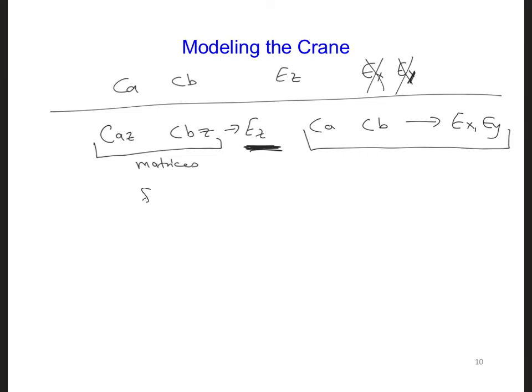These could be set to free space everywhere, except at the crane, which is at Imax divided by 2, Jmax divided by 2, and for K equals 2 to 61.